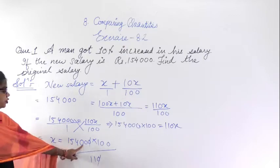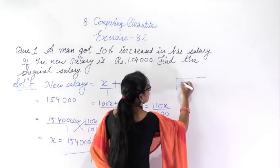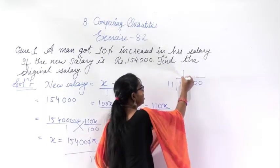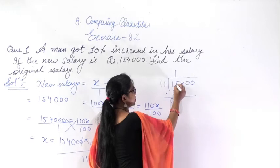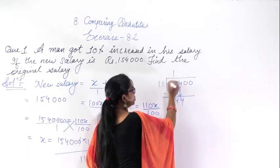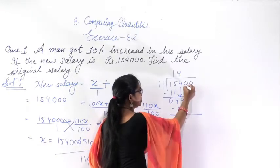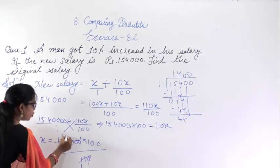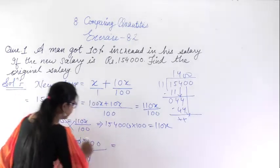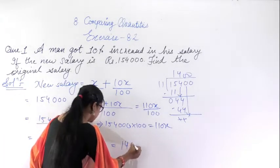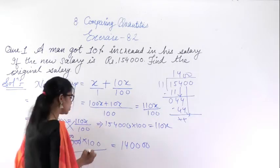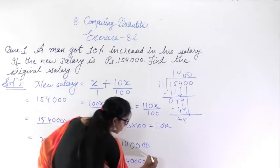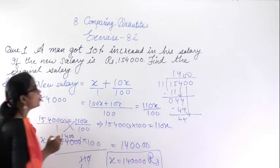So X equals 1,54,000 into 100 upon 110. Cancel the zeros — this 0 and this 0 get cancelled. Now we divide 1,54,000 by 11. On dividing, 11 into 14 gives 1 remainder 3; bringing down gives 44, and so on. You get 14,000. So X equals 14,000 rupees. This is the original salary.